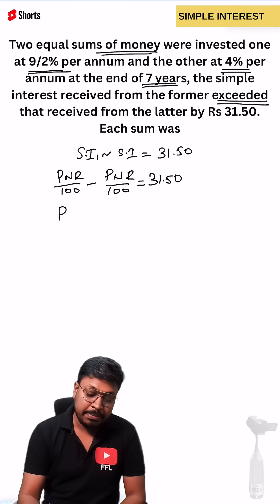Here we know that the principal is same, so P/100 we can take outside. Similarly, n will be number of years. Number of years is also same, so we can take 7 outside.